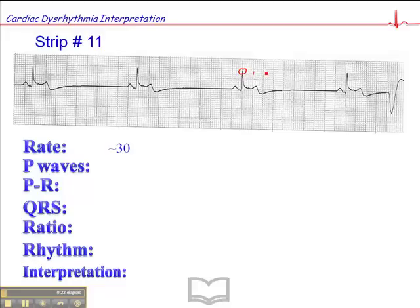The heart rate here is 300, 150, 100, 75, 60, 50, 43, 37, 33, 30. So that's a heart rate of 30. That's pretty dang slow. Not good.